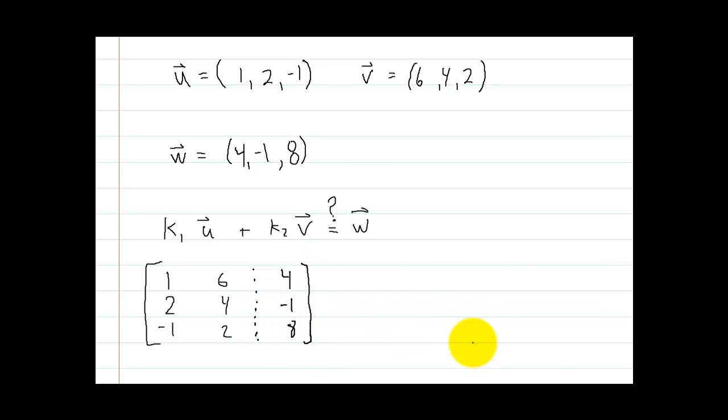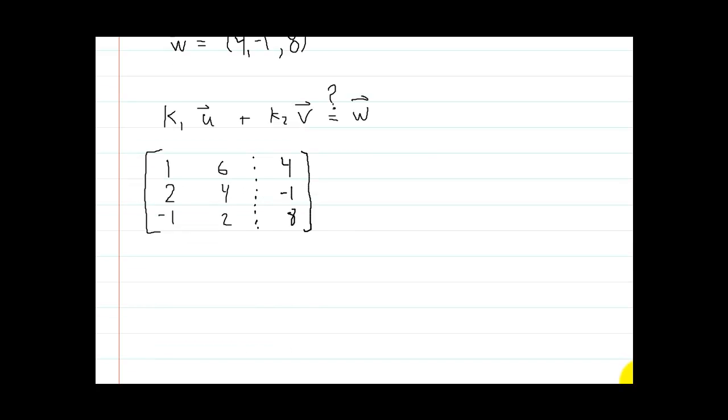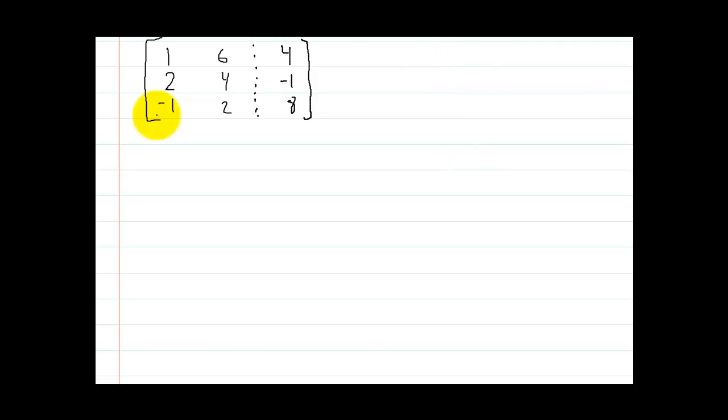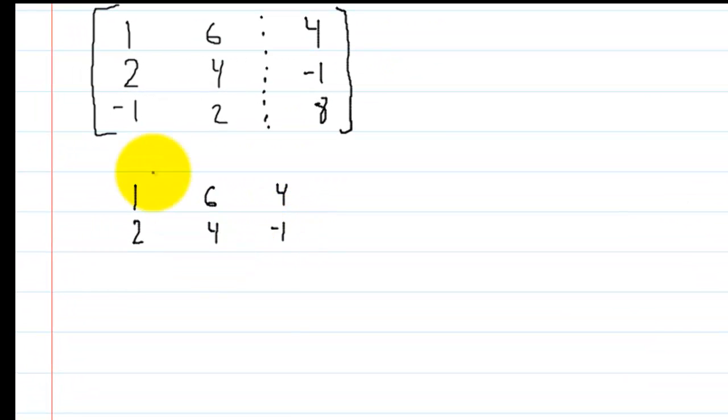And now, just as before, we're going to do row operations to reduce this down to row echelon form. Now, you could just use a calculator and do this really quick. But I'm going to work this out for you. So first thing is I'm going to add row 1 to row 3. So I'm going to leave the first two rows alone. So the first one, that's going to be 2, 6, 4, 4, negative 1. So adding, and now here I'm going to do is row 3 plus row 1. So let's see. Negative 1 plus 1 is equal to 0. 2 plus 6 is 8. And then 8 plus 4 is 12.